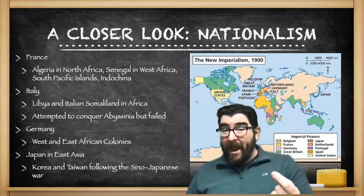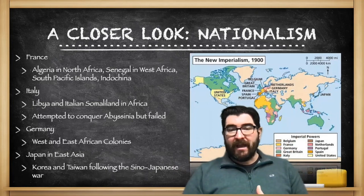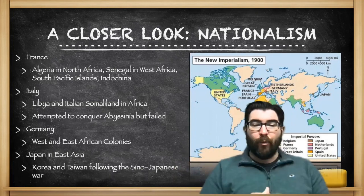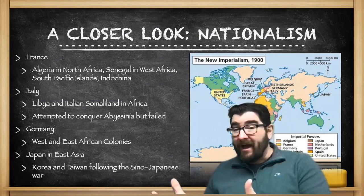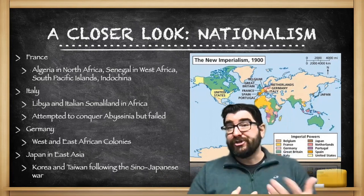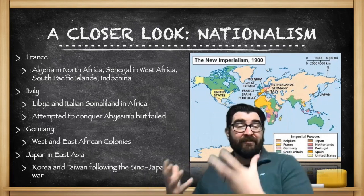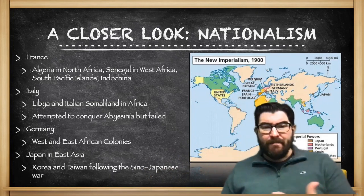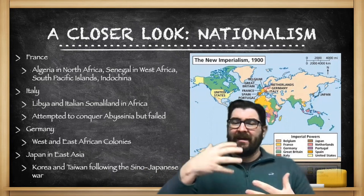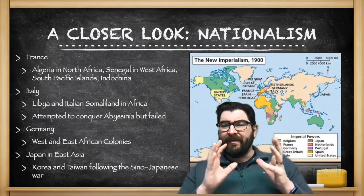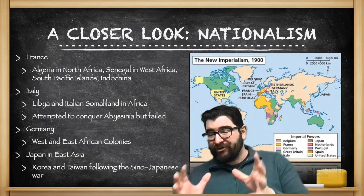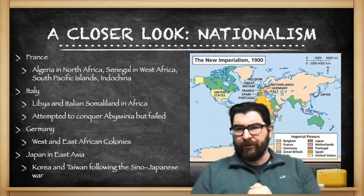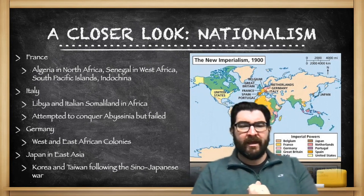With regard to France, they're also getting in the empire game, controlling Algeria in North Africa, Senegal in the west, South Pacific islands, and what is known as French Indochina — the countries today of Vietnam, Cambodia, and Laos. Italy is in the game with Libya and Italian Somaliland in Africa. The Italians also took a shot at conquering Ethiopia, but this was one failed attempt at imperialism — we'll talk about that more later.